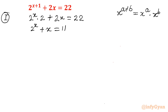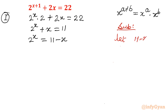Take x to the right side, so the left side will be 2 to the power x and the right side would be 11 minus x. Now it is time for substitution. I will substitute the right-hand side. Let 11 minus x equal to t. So from this equation I can write x equals 11 minus t, and our equation converts into 2 raised to the power 11 minus t equals t.